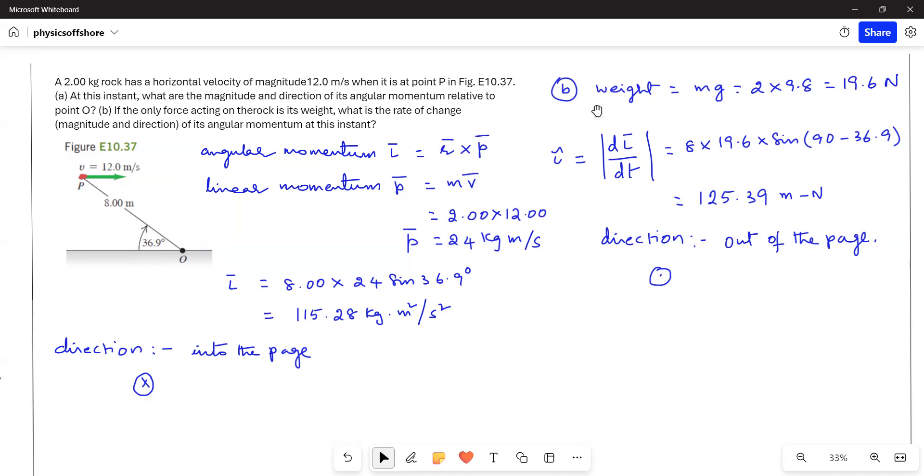Next, if the only force acting on the rock is its weight, what is the rate of change of angular momentum? Rate of change of angular momentum is the torque. Torque equals r cross F. Here F is the weight acting downwards, and r is 8. We have to consider the angle,